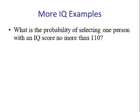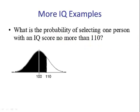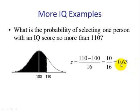What is the probability of having one person with an IQ score no more than 110? No more than 110 means less than. So we draw our picture. Mean is 100 and it's in the middle. 110 and no more means less than. Next step, we change 110 to a z-score, 0.63.